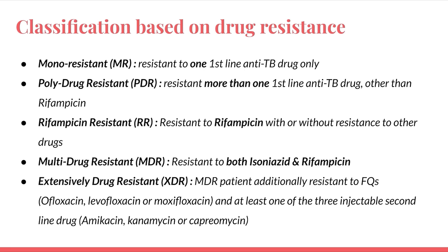Drug resistance classification: Mono-resistant — resistant to only one first-line anti-tuberculosis drug. Poly-drug resistant — resistant to more than one first-line drug other than rifampicin. Rifampicin-resistant — resistant to rifampicin with or without resistance to other drugs. Multi-drug resistant (MDR-TB) — resistant to both isoniazid and rifampicin. Extensively drug-resistant (XDR-TB) — MDR-TB additionally resistant to fluoroquinolones (ofloxacin, levofloxacin, moxifloxacin) and at least one of three injectable second-line drugs: amikacin, kanamycin, or capreomycin.